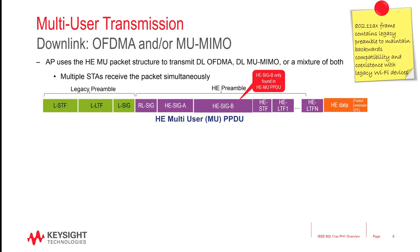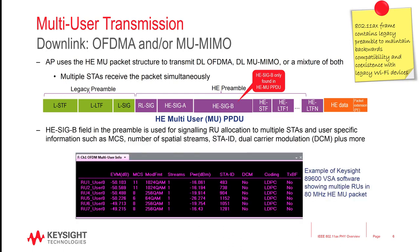How does multi-user transmission work? In the downlink, the access point uses the high-efficiency multi-user PPDU format to transmit packets to multiple stations simultaneously. The high-efficiency SIG-B field, which is only transmitted in this multi-user PPDU, carries resource unit assignment and user-specific information to the multiple stations, allowing these stations to look up the corresponding resources in the data portion of the frame. Here is an example from 89600 VSA software showing downlink OFDMA allocations with multiple resource units and various metrics decoded from the SIG-B field.